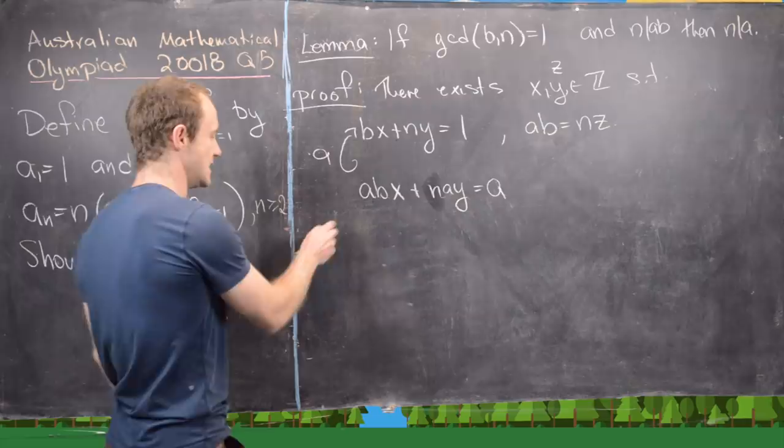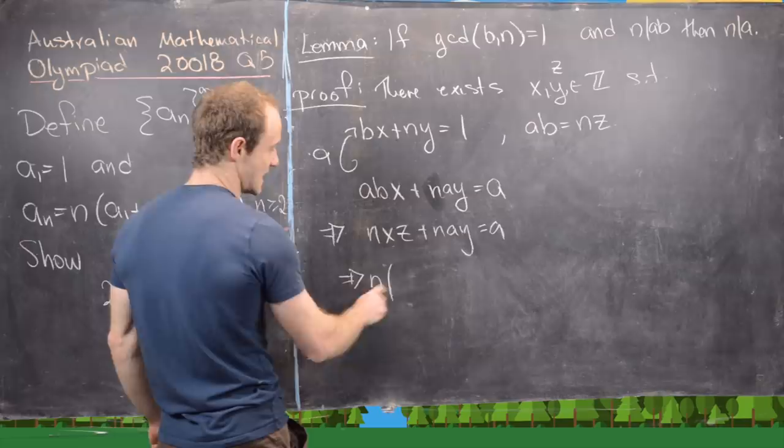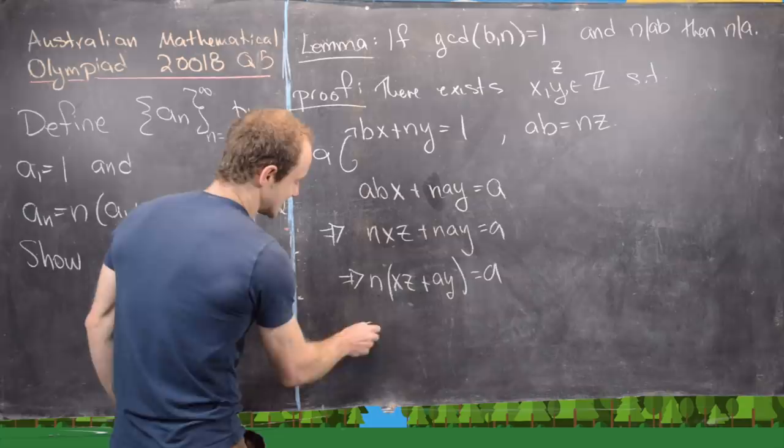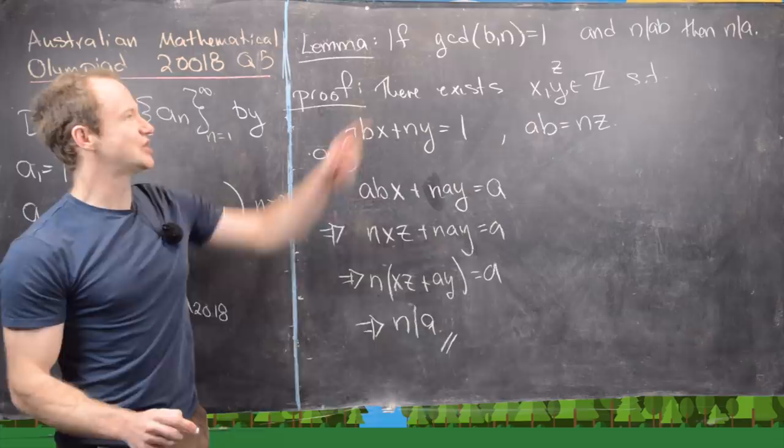But now we know that ab is a multiple of n so we can insert that. So this is nxz plus nay equals a but now we can factor an n out of the left hand side and we have n times the quantity xz plus ay equals a but that's exactly saying that n divides a. Great. Which achieves the goal for this lemma.